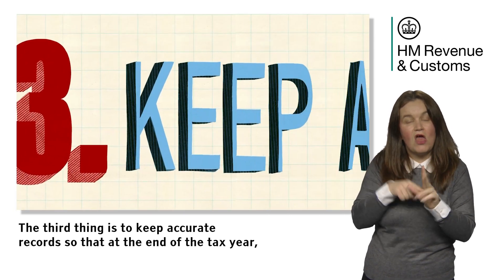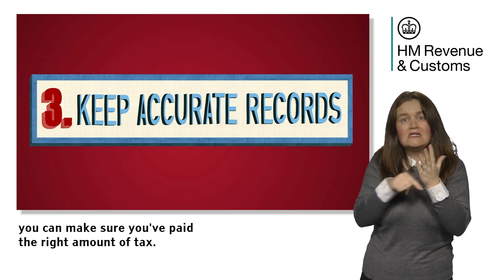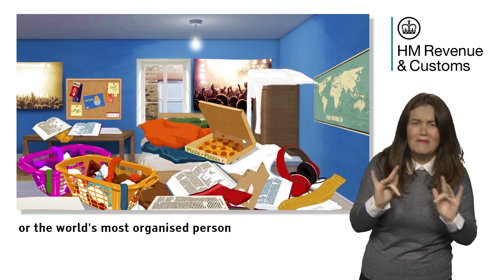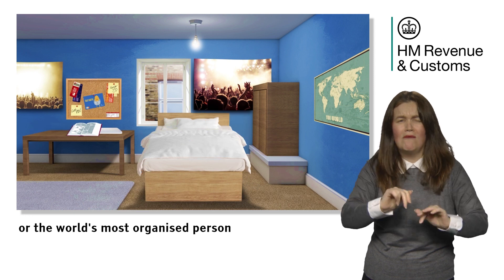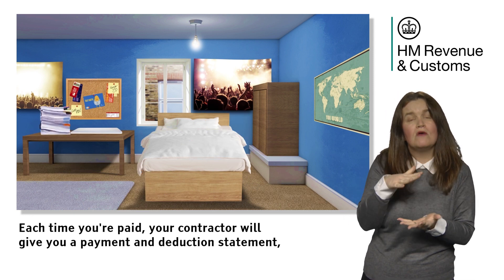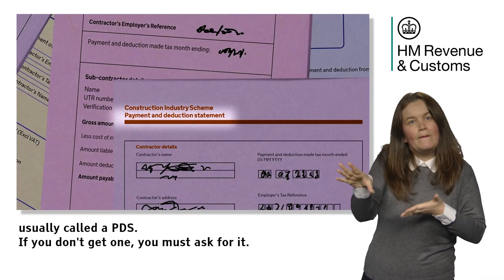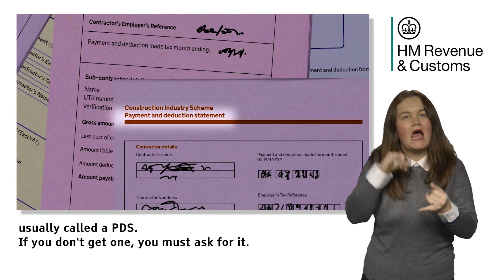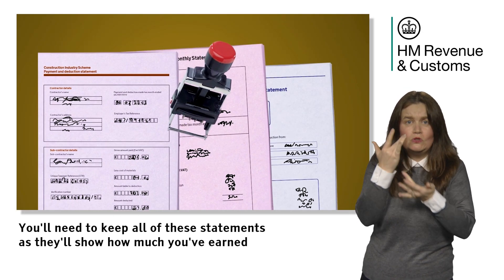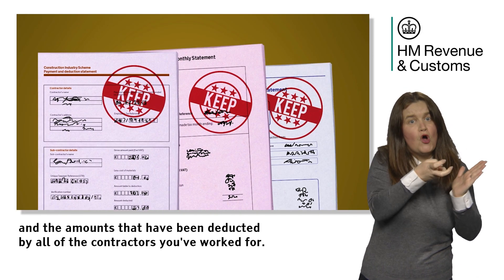The third thing is to keep accurate records so that at the end of the tax year, you can make sure you've paid the right amount of tax. Whether you're the most disorganised person you know or the world's most organised person, you'll need to stay on top of the paperwork. Each time you're paid, your contractor will give you a payment and deduction statement, usually called a PDS. If you don't get one, you must ask for it. You'll need to keep all of these statements as they'll show how much you've earned and the amounts that have been deducted by all the contractors you've worked for.